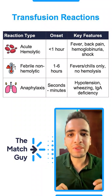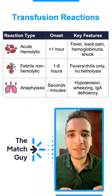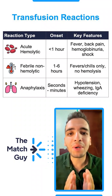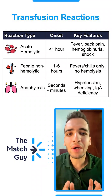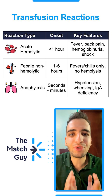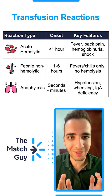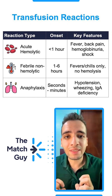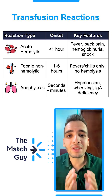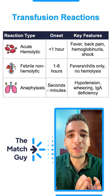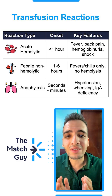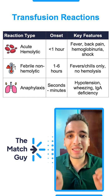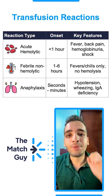I scored 279 on my step exams and this is how I used to break down any transfusion reaction question. If it happens within seconds or minutes and the patient develops hypotension and wheezes, think about anaphylactic shock, especially in a person with IgA deficiency.